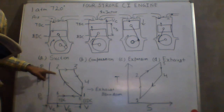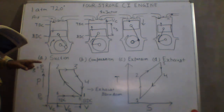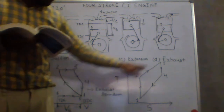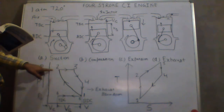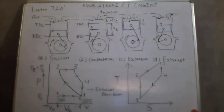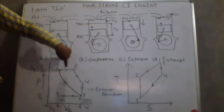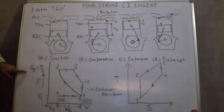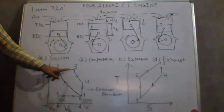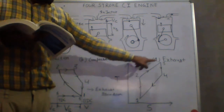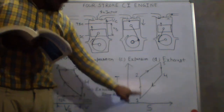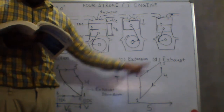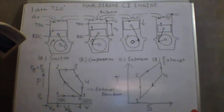The next process, 2 to 3, is constant pressure heat input. From 2 to 3, we are adding heat and pressure is constant: P3 equals P2. Temperature increases from T2 to T3, and entropy also increases whenever heat is added. This is constant pressure heat addition.